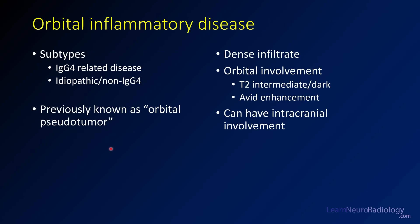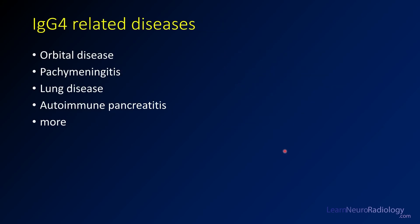This is a case of orbital inflammatory disease. You can have the IgG4-related subset or the idiopathic type — we no longer call it pseudotumor. The hallmark findings are a dense infiltrate with T2 intermediate to dark signal and avid enhancement. You can also have intracranial involvement, particularly along the optic nerves and dura of the middle cranial fossa. IgG4 is also implicated in pachymeningitis, lung disease, and autoimmune pancreatitis, so patients may have findings in other organs.